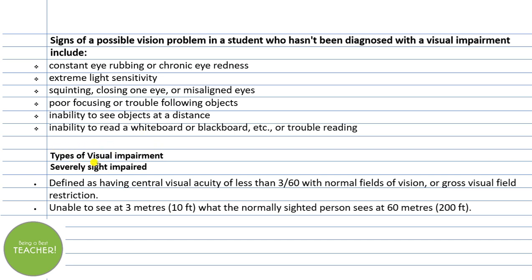Then, types of visual impairment: one type is severely sight impaired. Sometimes vision loss is partial — not complete blindness. Severely sight impaired is defined as having central visual acuity of less than 3/60 with normal fields of vision, or gross visual field restriction — meaning the person is unable to see at 3 meters (10 feet), whereas a normally sighted person can see up to 60 meters. You can gauge from this how limited their vision is.